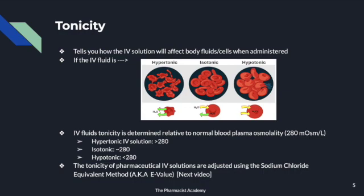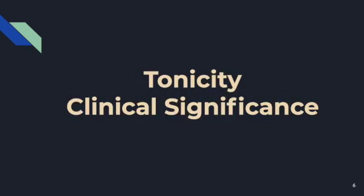How do we determine if an IV solution is hypertonic, isotonic, or hypotonic? It is based on blood plasma osmolality — the normal concentration of blood is about 280 mOsm/L. If the IV solution osmolality is higher than 280, it's hypertonic; around 280, it's isotonic; and lower than 280, it's hypotonic. The tonicity of IV solutions can be adjusted using a method known as the sodium chloride equivalent, also called the E-value, which will be covered in the next video.